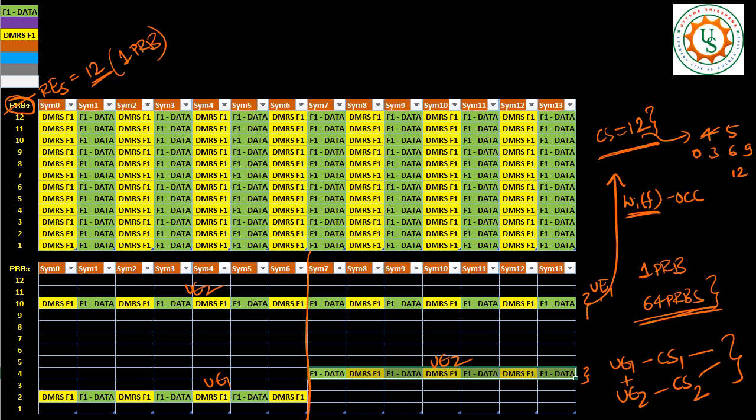And let's say, in cyclic shift, I will take another 4 combinations. Then, in which case, total 16 UEs. 4 x 4, 16 UEs can be multiplexed on the same time frequency resource.